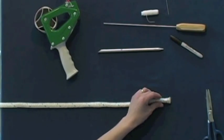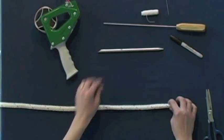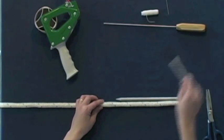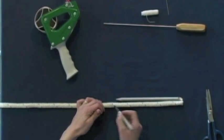Now take your fid, this is half inch rope, we're using a half inch fid, and measure one fid length on your rope and mark it.